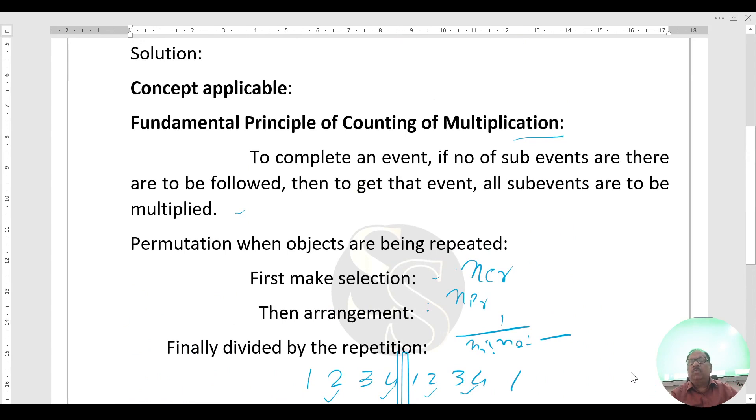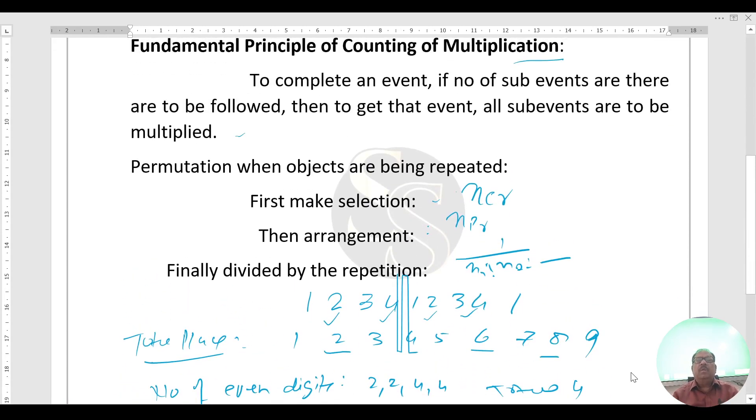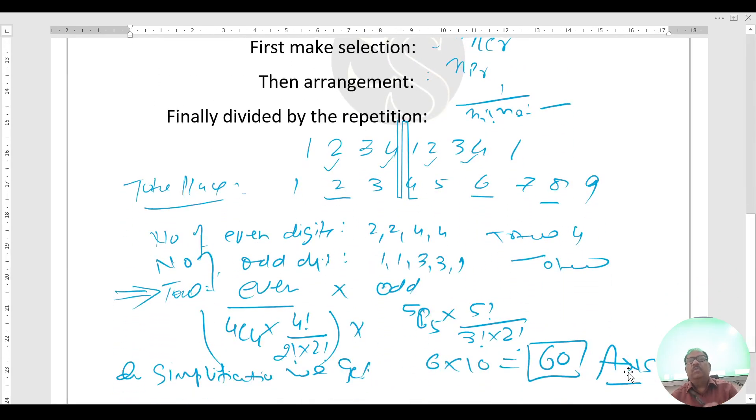Again repeating: what is fundamental principle? To complete an event, if number of sub-events are there, in this case 2 sub-events to occupy even places and odd places, then all sub-events are to be multiplied. In this case repetition is also there. Repetition concept: first make selection 4C4, then arrangement, then division. This is the concrete concept of Fundamental Principle of Counting and Repetition.